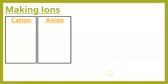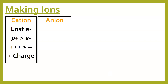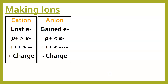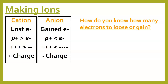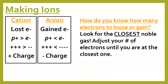A quick refresher: cations have lost electrons, so there are more protons than electrons, resulting in extra positive charge. Anions have gained electrons — too many to cancel out — giving a minus charge. The way you know how many electrons to lose or gain is to look for the closest noble gas and adjust the number of electrons until you look like the closest one.